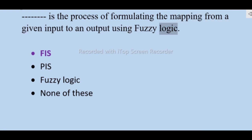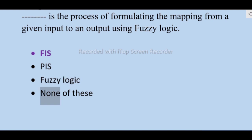The process of formulating the mapping from a given input to an output using fuzzy logic is called FIS (Fuzzy Inference System) — not Pies, fuzzy logic, none of these.